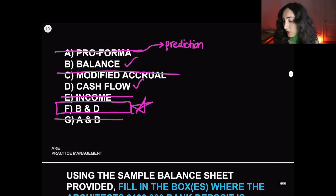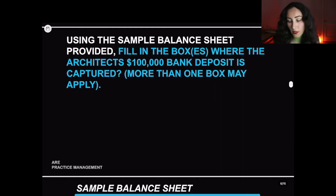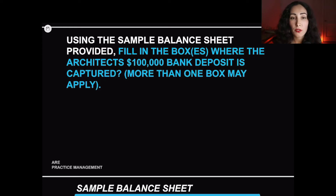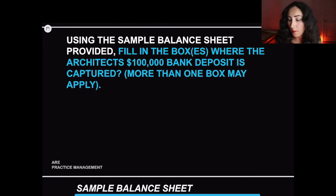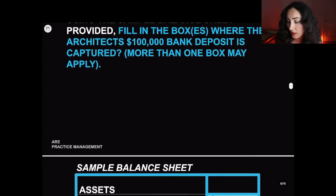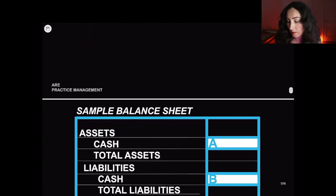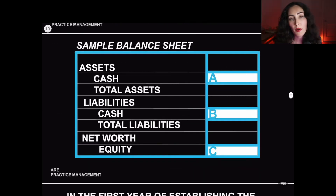Let's move on to part two. We're going to use the same information from part one and continue. Using the sample balance sheet provided, fill in the boxes where the architect's $100,000 bank deposit is captured. More than one box may apply. You can pause the video right here if you'd like to figure out where the $100,000 goes.